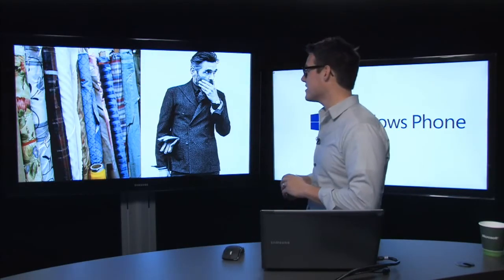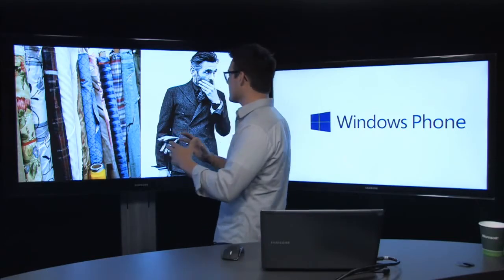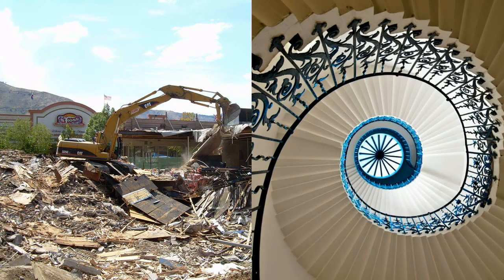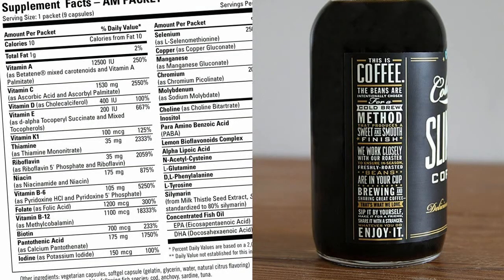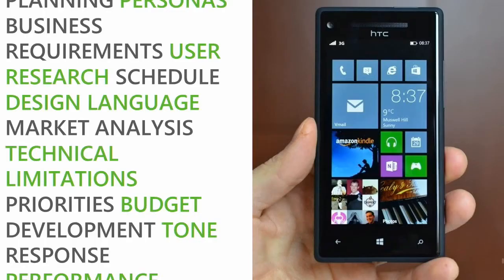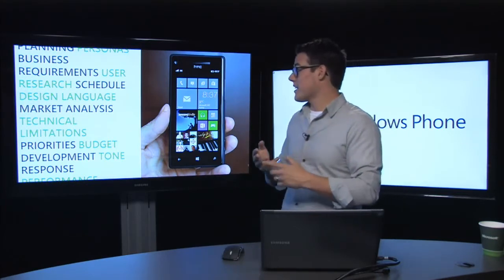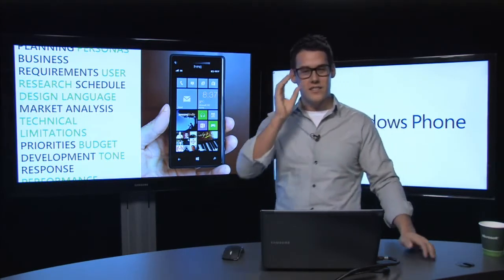This is the job for many different designers in many different roles. For a stylist or fashion designer, it may be taking all kinds of different materials and putting them in such an order that the design feels simple and beautiful. For an architect, it may be using a location or building materials. For the graphic designer, it may be something like a menu or supplemental facts about ingredients. For us on a Windows Phone design, it was more than just putting a calendar, a map, a clock, and books together on a device. When you're working on a mobile app, you're thinking about business requirements, research, schedule, the design language, market analysis, and technical limitations of the devices.